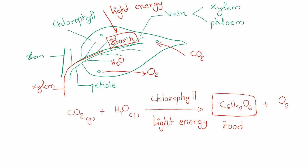The first step transports products to the storage organs. The storage organ stores the organic molecules, and the transport system moves materials from the leaves to the growing regions and storage organs throughout the plant.